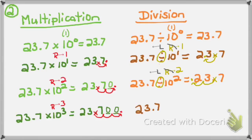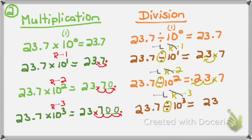But if I had 23 and 7 tenths divided by 10 to the 3rd power — same philosophy: 10 to the 3rd is greater than 1, meaning I move my decimal to the right three places since my exponent is 3. But this is not multiplication, it's division — the opposite — so I have to move my decimal in the opposite direction, to the left. I write down 23.7, cross out my decimal, and move it 1, 2, add a place value zero so I can move it three places to the left. So 23 and 7 tenths divided by 10 to the 3rd power equals 0 and 237 ten-thousandths.